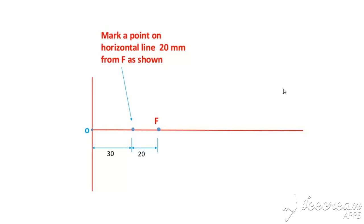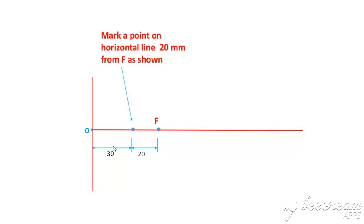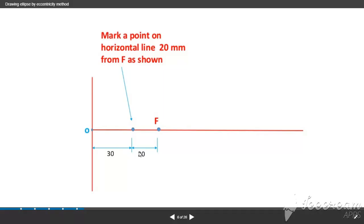Mark a point on the horizontal line 20mm from F. Here is 20mm distance and here is 30mm distance. Because the eccentricity is 2/3, so 20mm from the focus. The point...